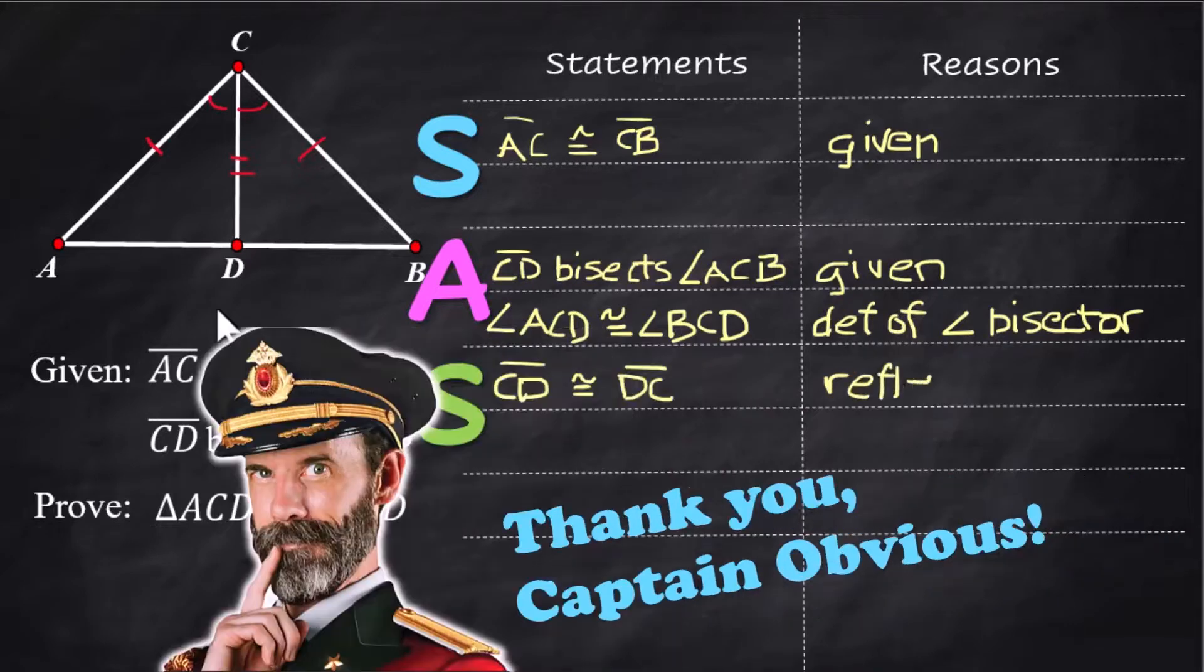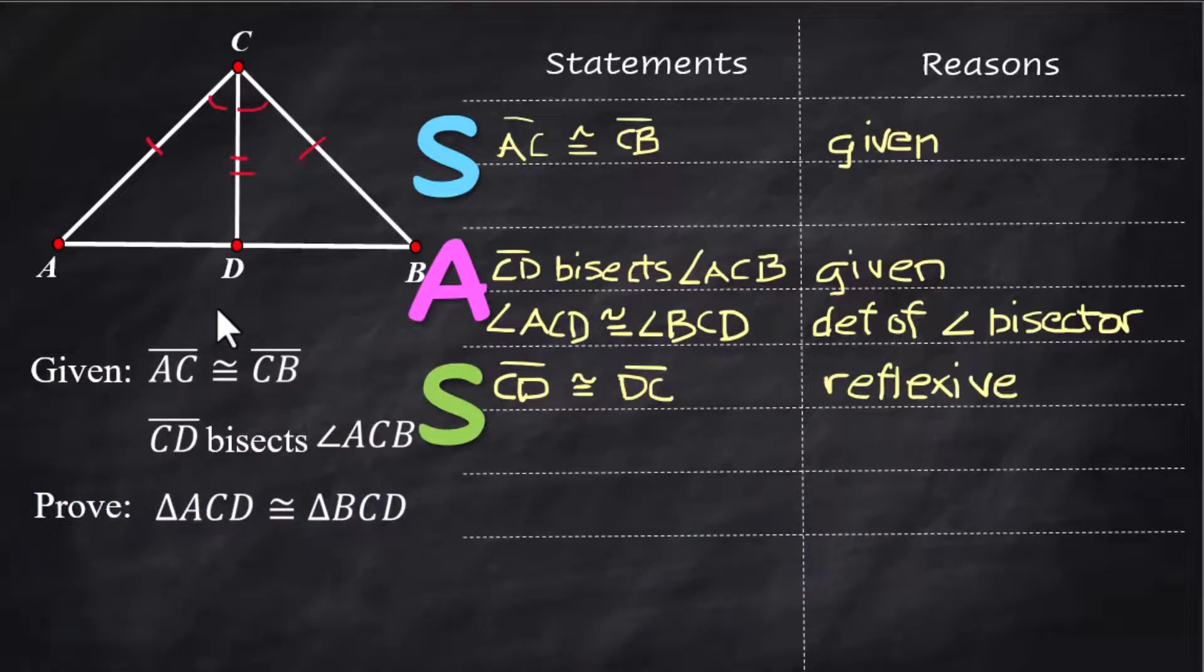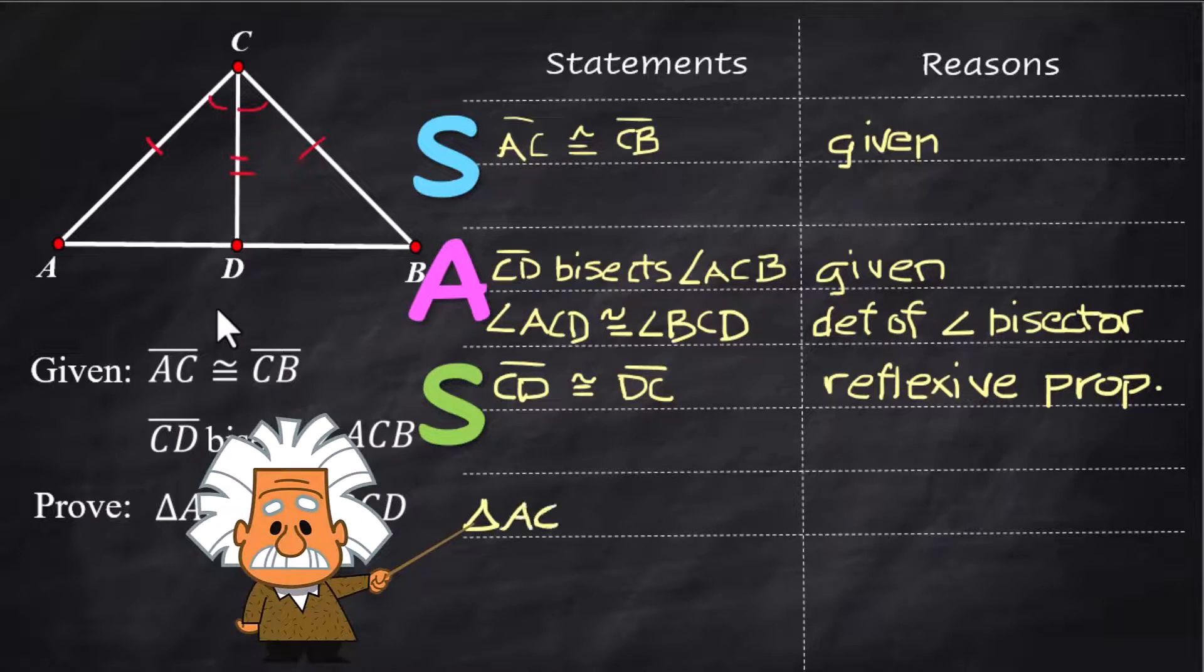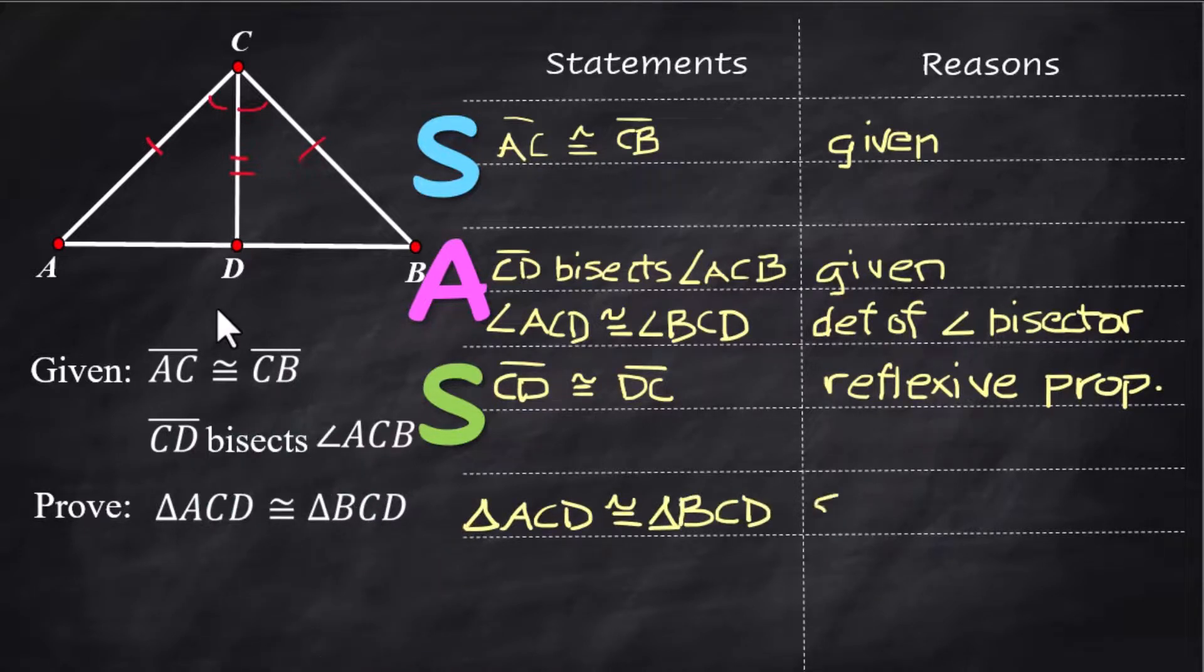Therefore, triangle ACD is congruent to triangle BCD, and the reason is the Side-Angle-Side triangle congruence theorem. Abbreviations are okay.